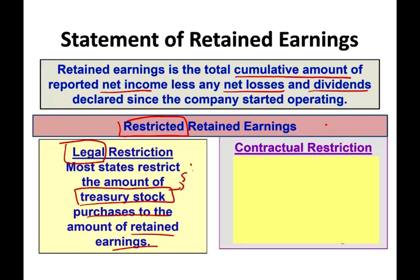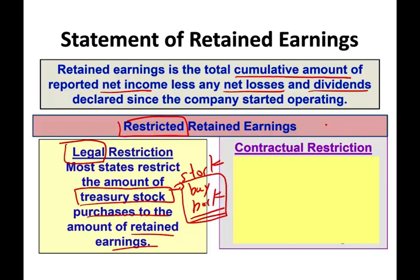Treasury stock is basically the same thing as a stock buyback — when the company buys back their own stock. And when you buy back your own stock, you are essentially rewarding yourself. So in some states, there is a legal restriction in the sense that you cannot buy treasury stock in excess of your retained earnings, which restricts that amount.